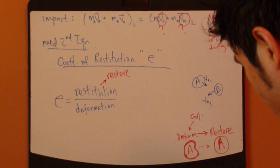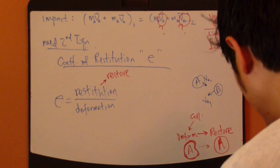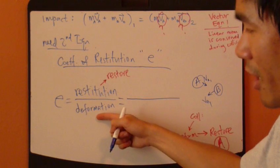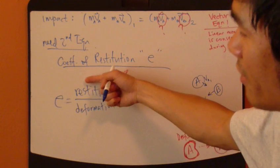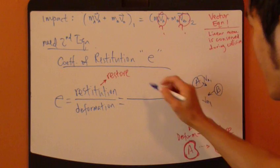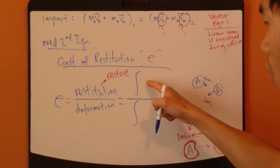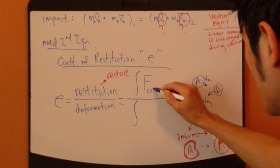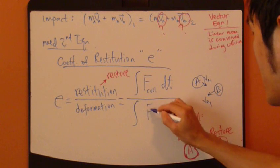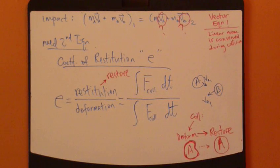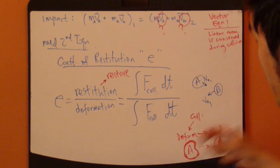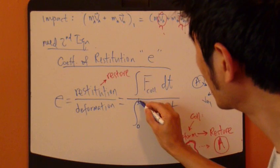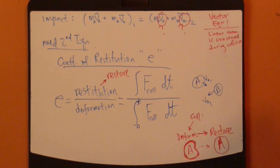So now, the more precise definition is actually impulse. The impulse during deformation is the impulse during the restitution phase. And the impulse is force integrated over dt, the collision force integrated over dt. Now, for deformation, which is the first phase of collision, the time going from zero to deformation time.